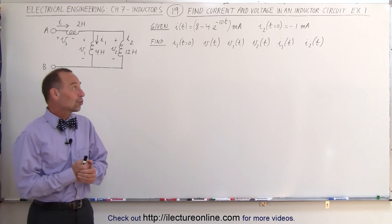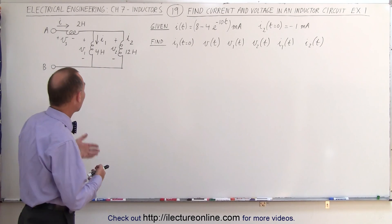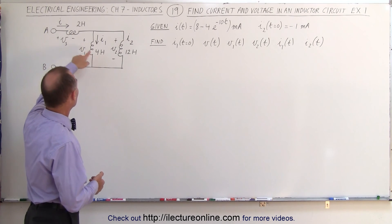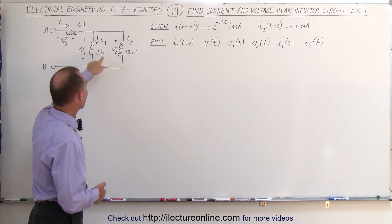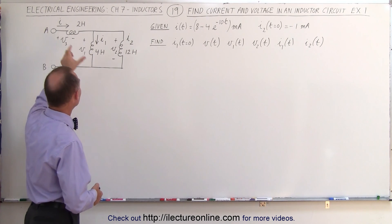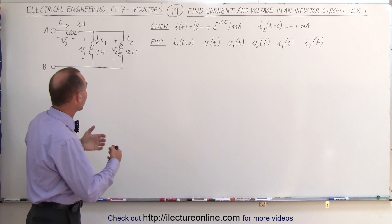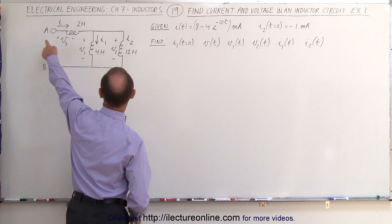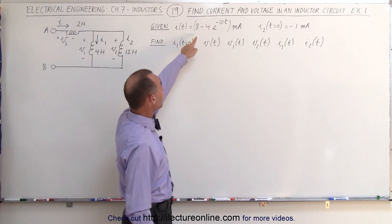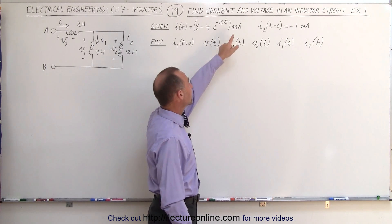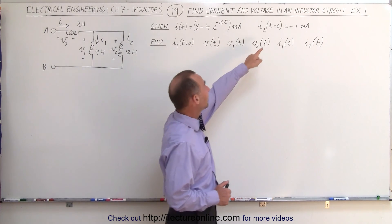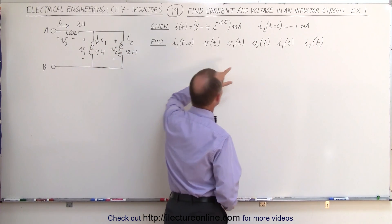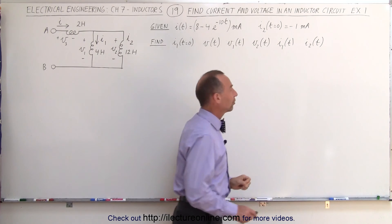Welcome to Electron Line. We're going to solve a circuit which has inductors in it. Solving means finding the current through the first inductor and the two inductors in parallel, as well as the voltage across each inductor and the entire circuit. We're given that the current entering the circuit through the first inductor equals 8 minus 4e to the minus 10t in milliamps, and that the initial condition for the second inductor's current equals minus 1 milliamp at t equals 0.